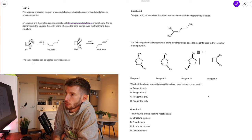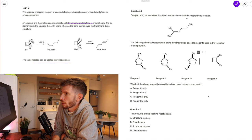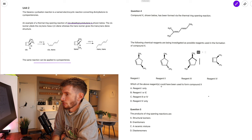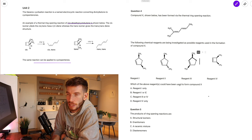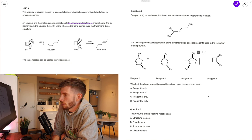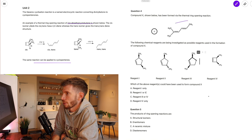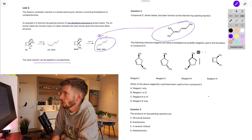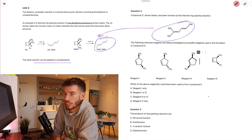The stem also says the same reaction can be applied to cyclopentenes. Compound X shown below has been formed by a thermal ring opening reaction. Various chemical reagents are being investigated as possible reagents used in that formation. Question 4 asks which reagent or reagents could have been used to form compound X. The first thing I do is try to see how this compound is similar to the structures shown. It looks very similar — I'd just need to add an extra CH3 group. That's good news.